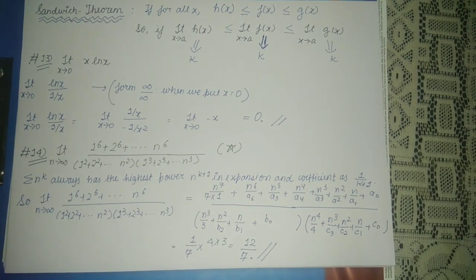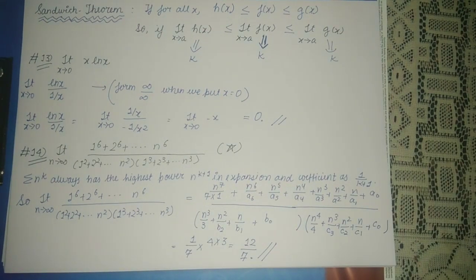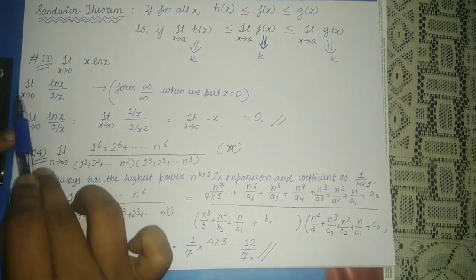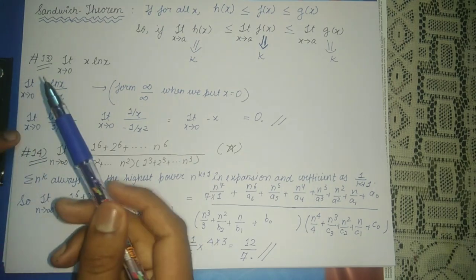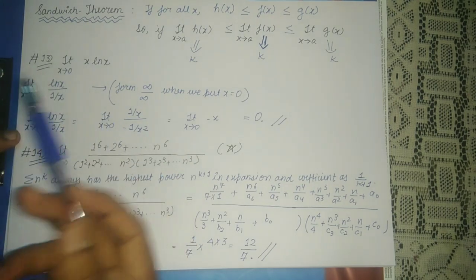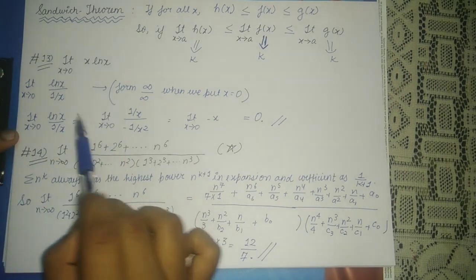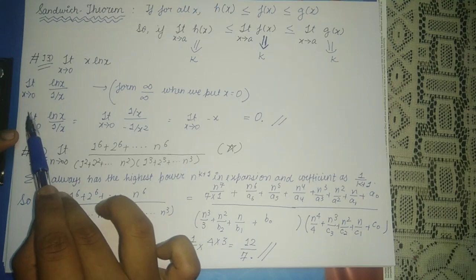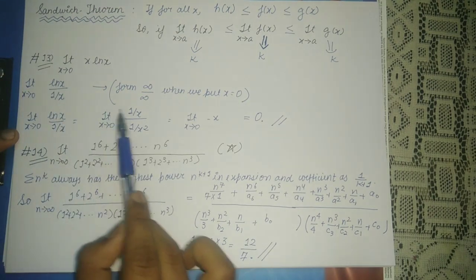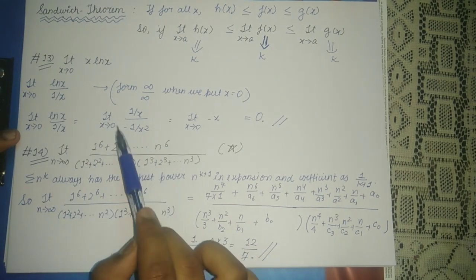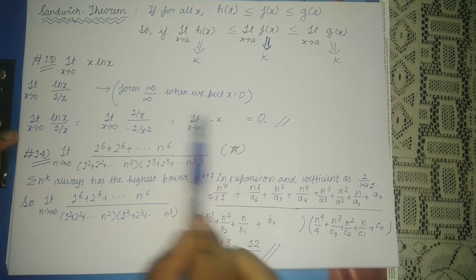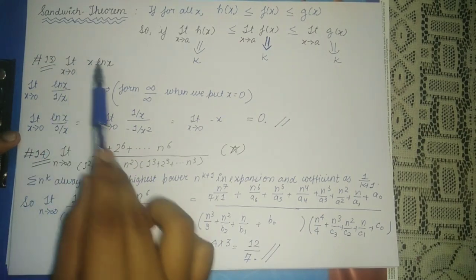Now let's see some more questions. Limit as x tends to 0 of x·ln(x) can be written as limit of ln(x) / (1/x). Since ln(x) tends to −infinity and 1/x also tends to infinity as x→0⁺, this is of the form infinity/infinity, so we apply L'Hôpital's rule. Differentiating ln(x) gives 1/x and differentiating 1/x gives −1/x², so the limit becomes: limit as x→0 of −x, which equals 0.